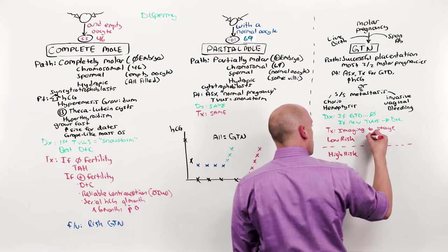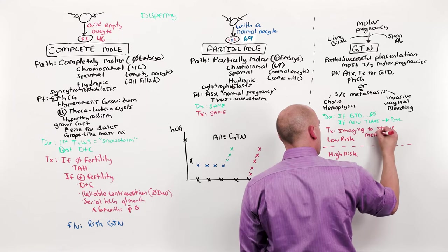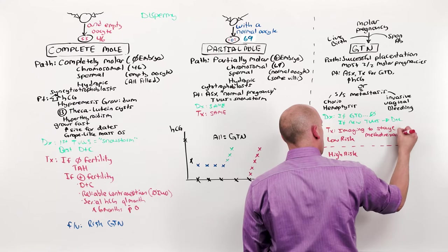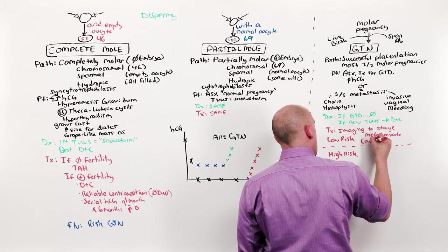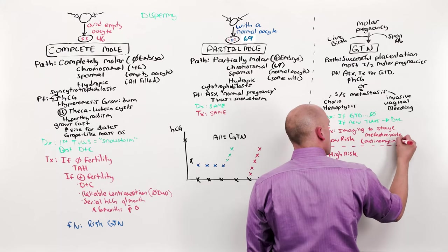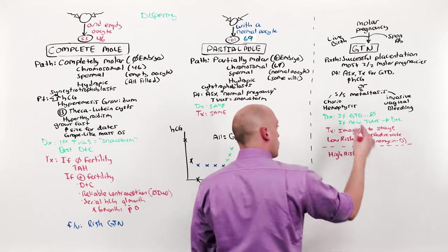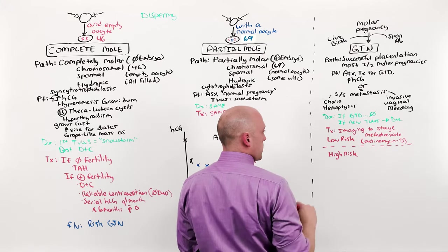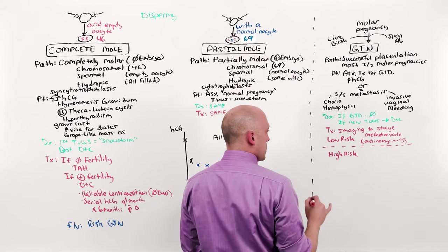If low risk, the only treatment that's needed is methotrexate, you can also use actinomycin D, but since it has more side effects than methotrexate and both are equally as efficacious, pick methotrexate. The two of them together do not do better for low risk.